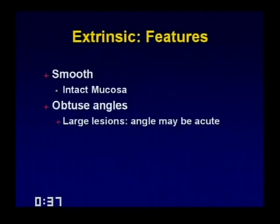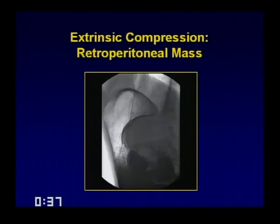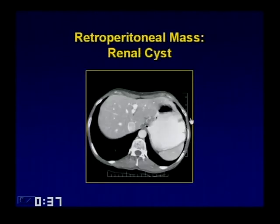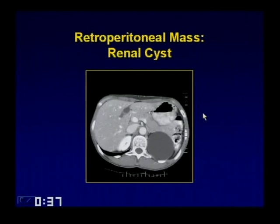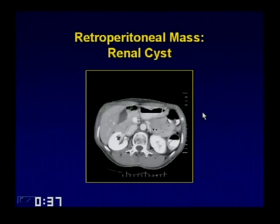For extrinsic lesions: smooth, intact mucosa, classically obtuse angles — though large lesions may show acute angles. Here's a lateral view from a double-contrast upper GI with a large mass along the posterior wall of the stomach — very hard to determine if it's submucosal or retroperitoneal. The CT scan reveals it's simply a cyst in the upper pole of the left kidney pushing on the stomach. Sometimes cross-sectional imaging is necessary. Going back to the esophagus, a smooth defect along the left wall just above the level of the arch turned out to be an aberrant right subclavian artery running posterior to the esophagus and causing an indentation on the posterior-lateral wall.